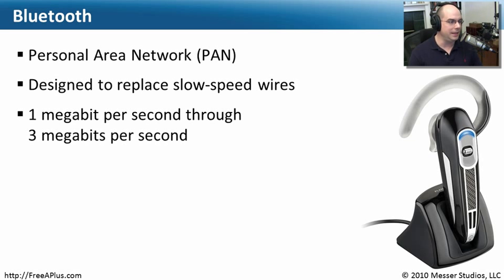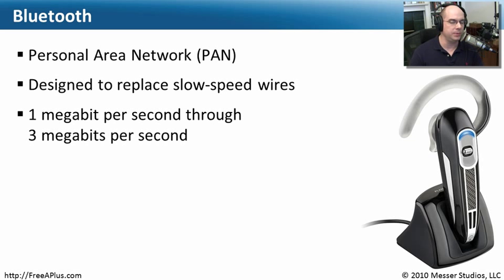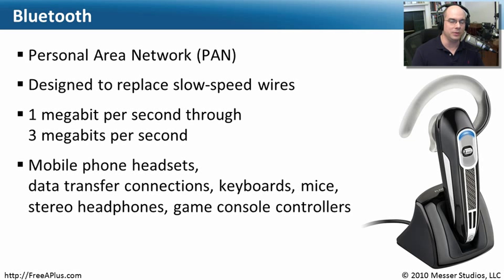The speeds on Bluetooth tend to be relatively slow, which makes sense — if we were replacing slower serial or wired connections, one to three megabits per second is what we can use. Bluetooth is also used for keyboards, mice, and file transfers. You might see it for personal use — get rid of those wires and use Bluetooth connectivity to connect your laptop to peripheral devices.